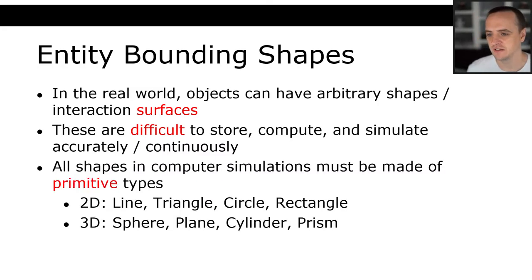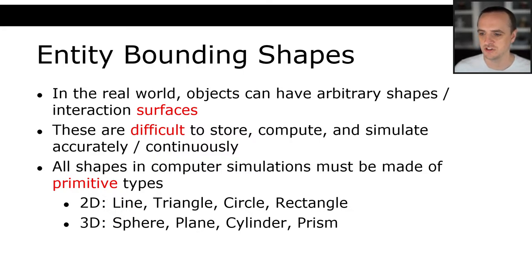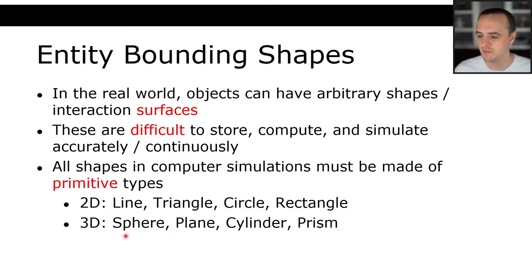No matter how you simulate that, all shapes in computer simulations must be made out of primitive types. In 2D games you could have lines, triangles, circles, rectangles. In 3D games you may have spheres, planes, cylinders, prisms. You could also have curves. A bounding shape concept is that we are going to simulate the complex interaction bounds of one shape with a simpler shape.